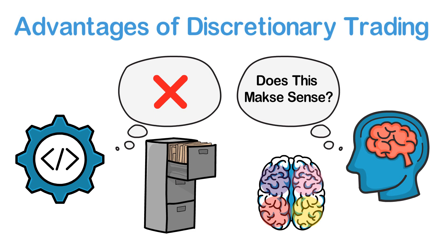It is possible to create dynamic trading algorithms, but generally speaking, it is easier for a discretionary trader to adapt to new situations than for a trading algorithm to adapt its strategy. Some experienced traders sometimes even make some of their trading decisions on a subconscious level based on the available information and their experience.